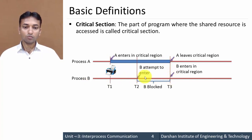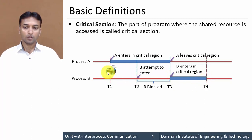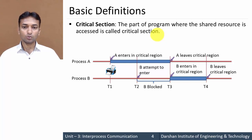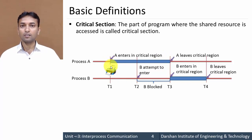Now process B is waiting for the printer. Once the printer becomes free, it is allocated to process B, and B enters the critical region up to time T4. At T4, process B releases the printer and leaves the critical region. So the critical region or critical section is nothing but a part of the program where the shared resource is accessed or used. The portion where these processes are using the printer is nothing but the critical section or critical region.